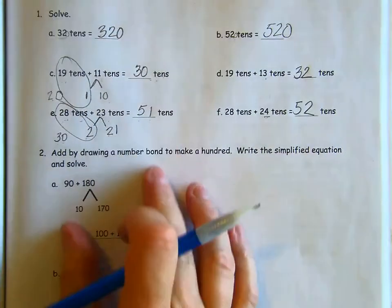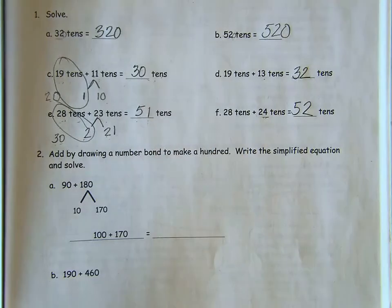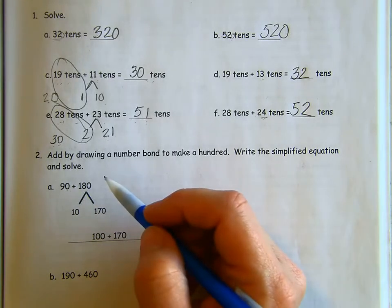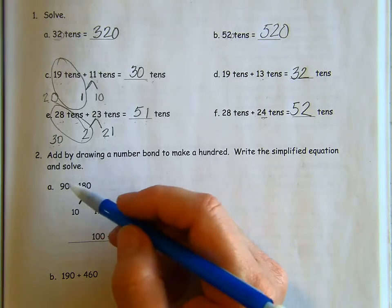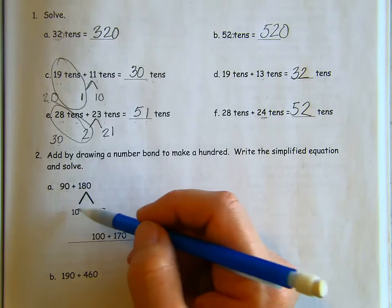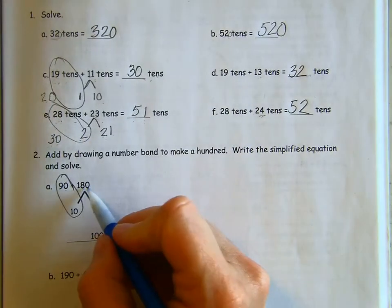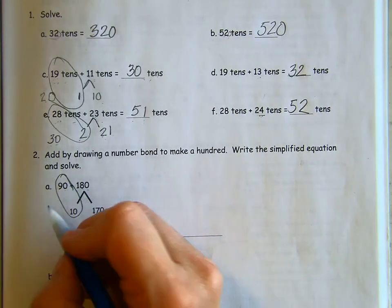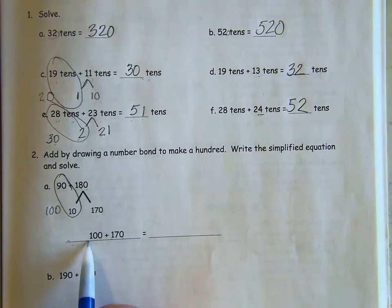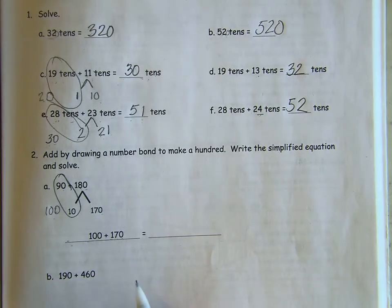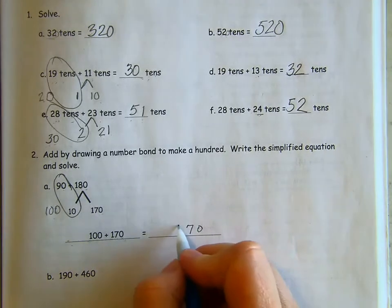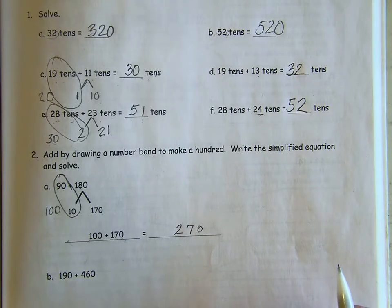All right. So now when we're using it into the hundreds instead of simplifying it into tens, we're going to do that same thing. We're going to decide which number is closest to the next 100. So in this case, 90 is closest to the next 100. So it needs 10 more. You take 10 out of 180 and you get 170 left. 90 and 10 is 100. We're going to write that simplified equation down here. So now we have 100 plus 170. Zero and zero is zero. Seven and zero is seven. One and one is 270.